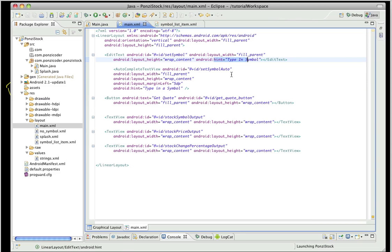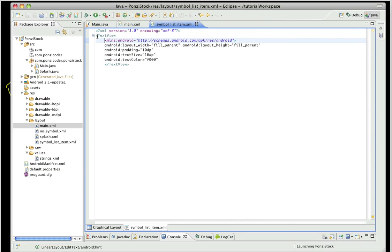The next item - you're going to want to right-click on layout, create a new XML file, and name it symbol_list or symbol_list_item. In that we're just putting in a text view, so have it look just like this. And so this defines what each item in our list is going to look like.